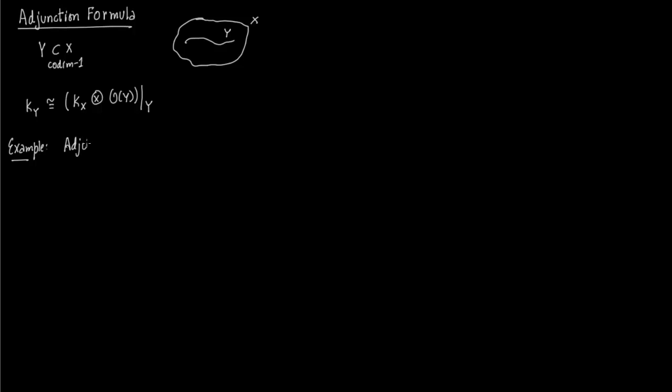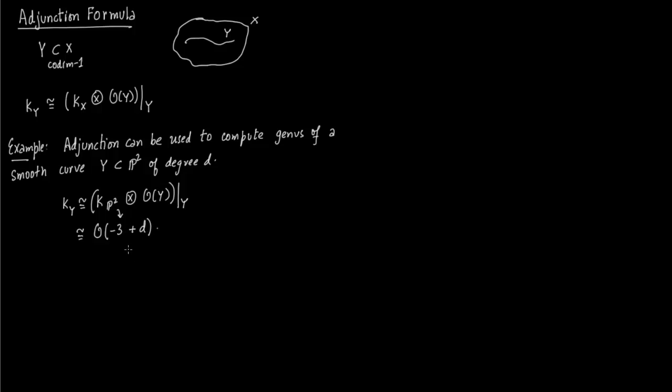We can use adjunction to compute genus of say a smooth plane curve y lying in P2. So adjunction can be used to compute the genus of a smooth plane curve y lying in P2. And this curve y has degree D. So we just feed in the values into the adjunction formula. So just copy down the adjunction formula replacing x with P2.